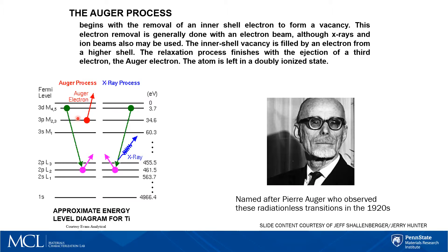So when we do Auger electron spectroscopy, we are studying the Auger electrons that are being emitted from the sample surface. When we study these characteristic x-rays, we may be using other common characterization techniques often referred to as EDS, EPMA for the electron microprobe, or XRF for x-ray fluorescence.